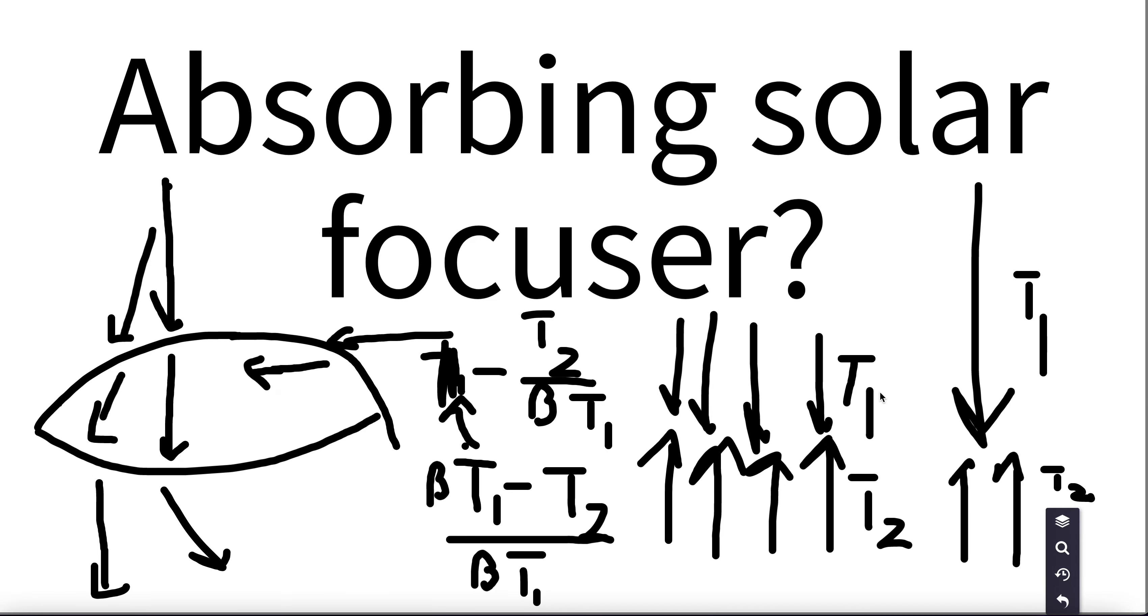First of all, the solar cell is oftentimes the most expensive part, so it can make it a lot less expensive if you just have a concentrator.